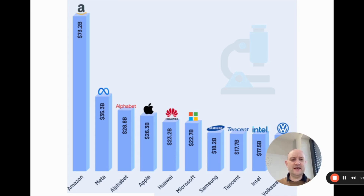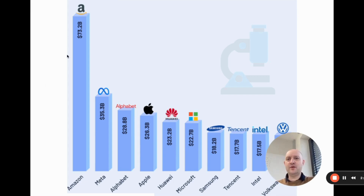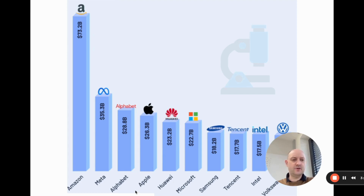As of 2022, this graph shows the top R&D spenders. The number one spender was Amazon with about 73 billion dollars, followed by Meta, Alphabet, and others. One thing that's pretty obvious from the table is that most of these are tech companies — all except Volkswagen at the bottom. At the moment it's mostly tech companies spending the largest amounts, though other companies are spending lots too — they just haven't made the top 10.